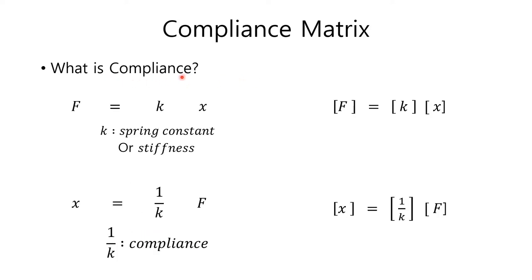What is compliance? We are familiar with this equation from Hooke's law: f is equal to kx, where f is force, x is displacement, and k is the material constant — the spring constant or stiffness. Let's change this equation to a different form. The displacement x can be expressed in terms of force and k, giving a constant which is the reciprocal of stiffness k. Compliance is just the reciprocal of stiffness.